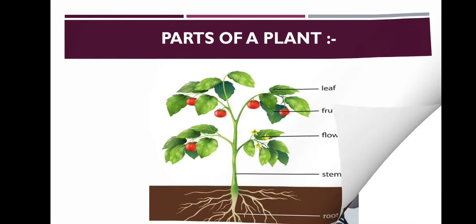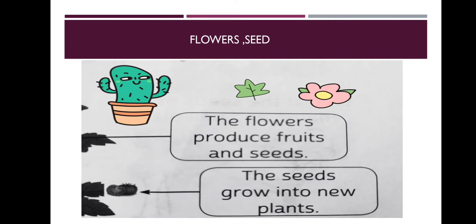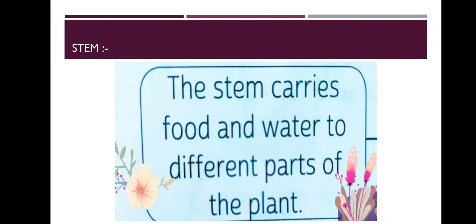And they are different types - sometimes they're soft, sometimes hard, sometimes thick, sometimes thin, according to the tree's nature, according to the nature of the plant. You can see that the stem carries food and water to the different parts of the plant. Its main function is to carry food and water.